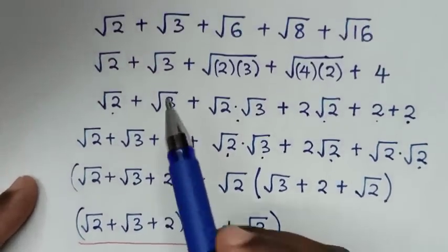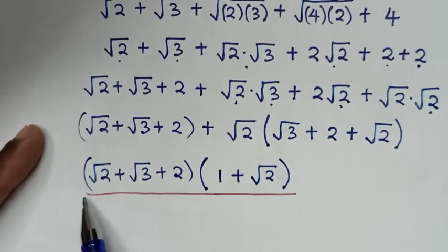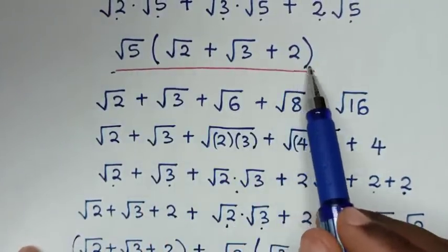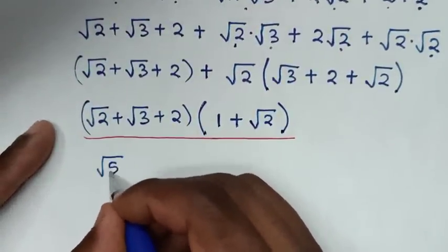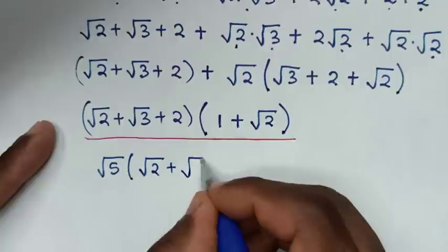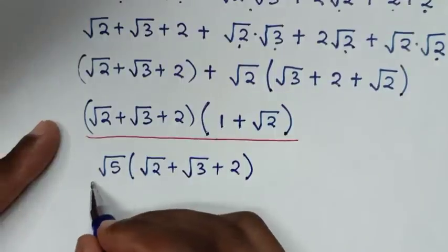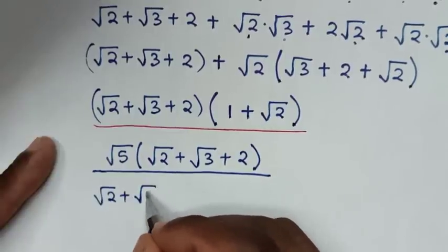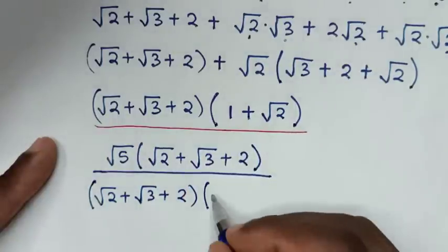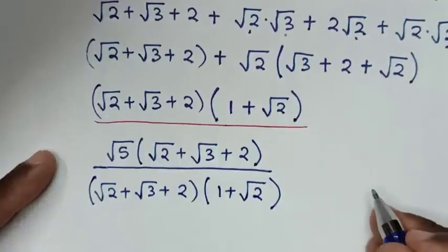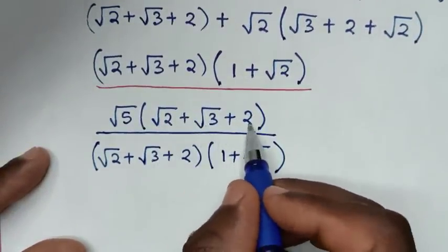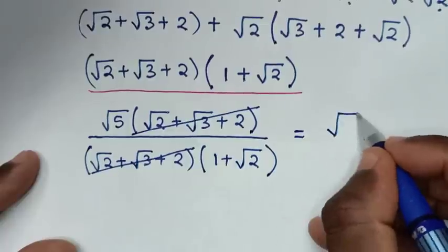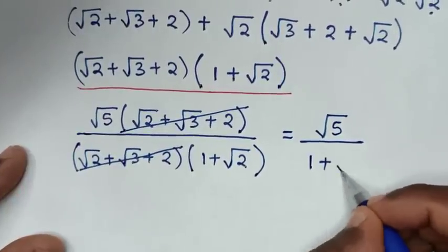In the next step, we take the simplified numerator divided by the simplified denominator. The numerator is square root of 5 times the bracket (square root of 2 plus square root of 3 plus 2), divided by the denominator which is (square root of 2 plus square root of 3 plus 2) times (1 plus square root of 2). The common factor (square root of 2 plus square root of 3 plus 2) cancels, leaving square root of 5 over (1 plus square root of 2).